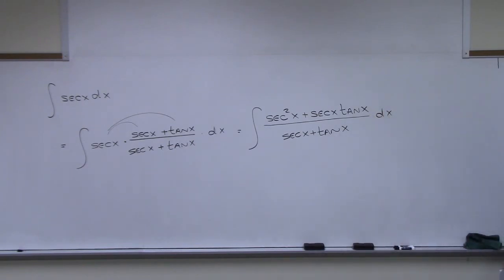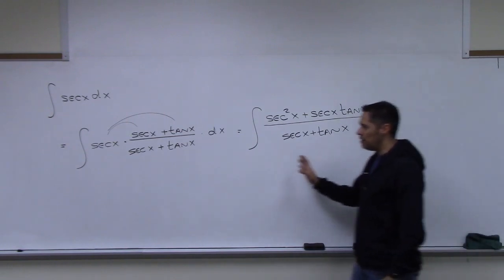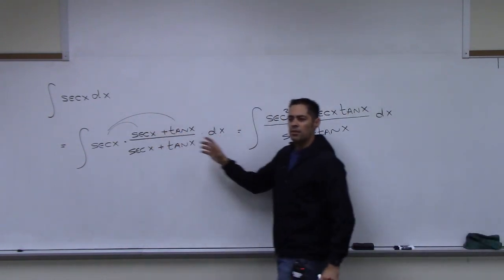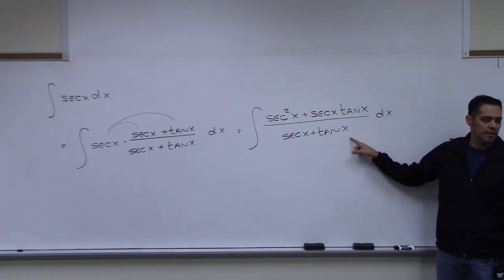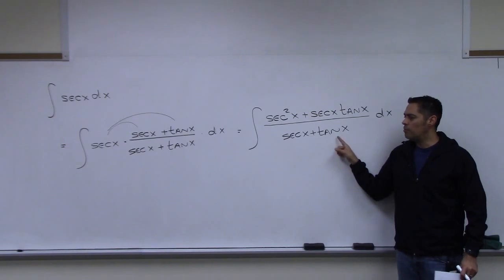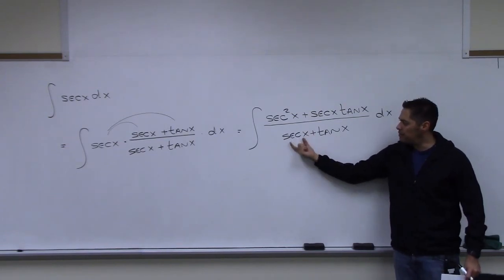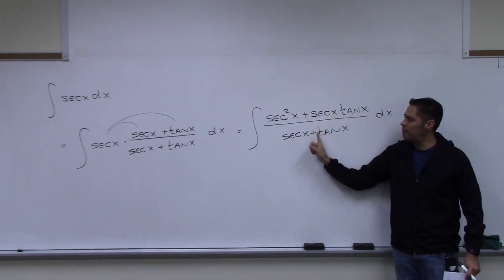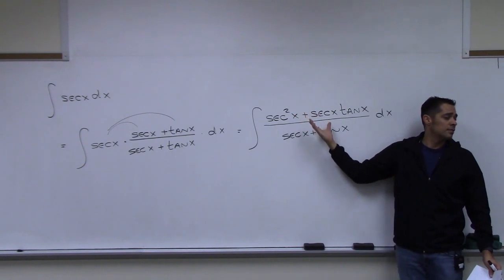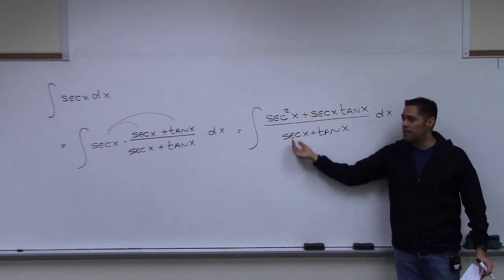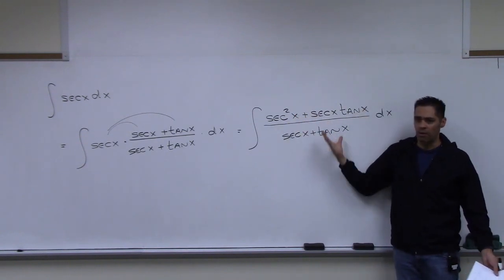Amazingly, if you choose u to be the denominator — basic substitution — the derivative of the denominator is secant x tangent x plus secant squared x, which is sitting right there in the numerator. The derivative of the bottom is sitting on top, and that's perfect.